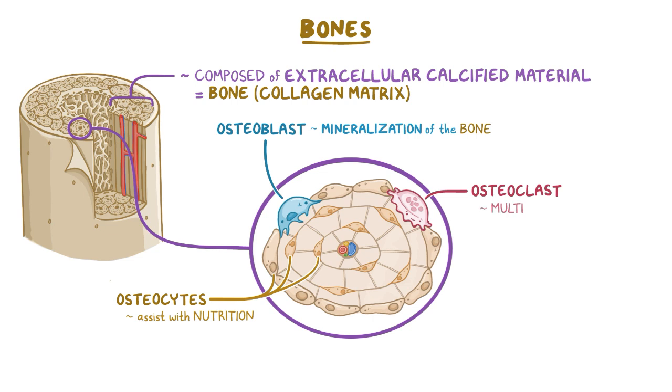Osteoclasts are large, multinucleated cells that are responsible for removing calcified bone matrix and allowing for the constant turnover and remodeling of bones.